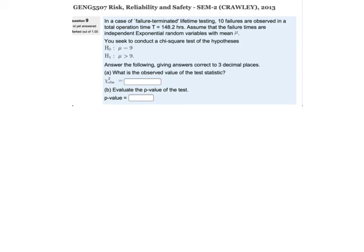In a case of failure-terminated lifetime testing, 10 failures are observed in a total operation time of 148.2 hours, but it's failure terminated. Assume that the failure times are independent exponential random variables with mean mu. We seek to conduct a chi-squared test on the hypothesis that H₀: μ = 9 and H₁: μ > 9.